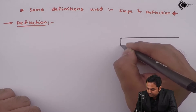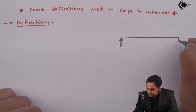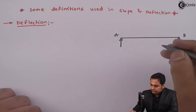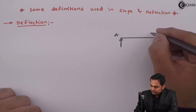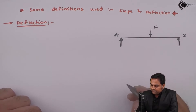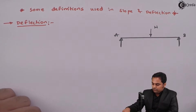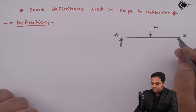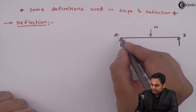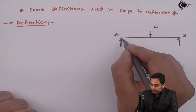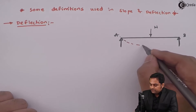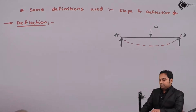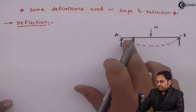I am considering a beam which is simply supported at A and B. Suppose there is a load acting at the center of this beam. Now under the action of this load, the shape of the beam is going to change. I am considering the beam as elastic, so when the load is acting the beam will deflect, and when the load is removed the beam will come back to its original position.